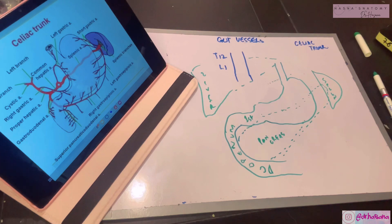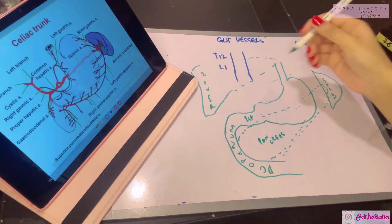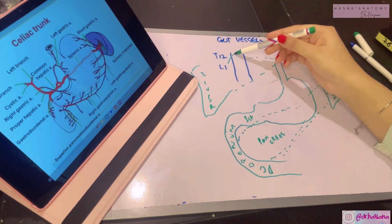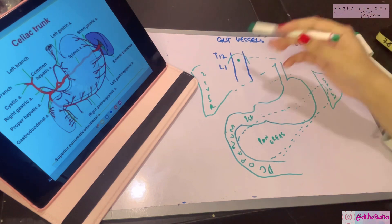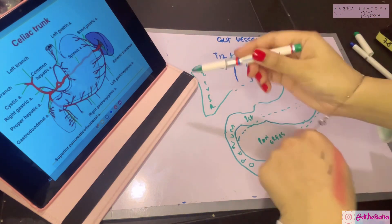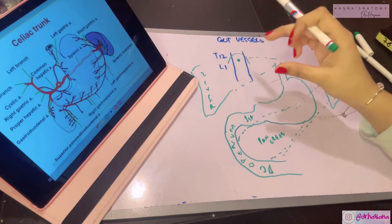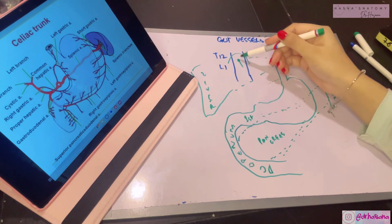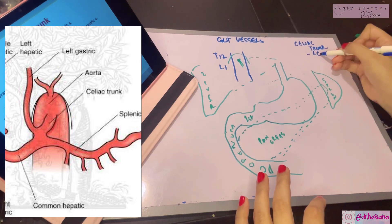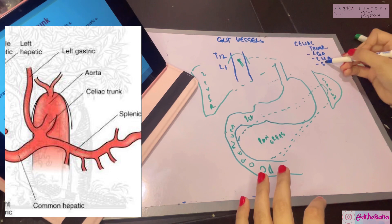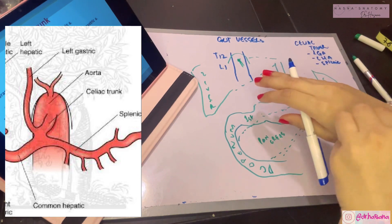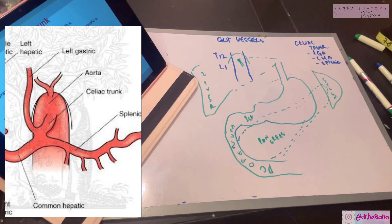The celiac trunk is one of the ventral branches of the aorta, arising right after the aorta leaves the aortic opening of the diaphragm. It originates at the level of the junction of T12 and L1 vertebra. It begins and lasts only about 1.25 centimeters, after which it terminates by dividing into its three terminal branches: the left gastric artery, the common hepatic artery, and the splenic artery. Among these, the splenic artery is the largest branch of the celiac trunk.